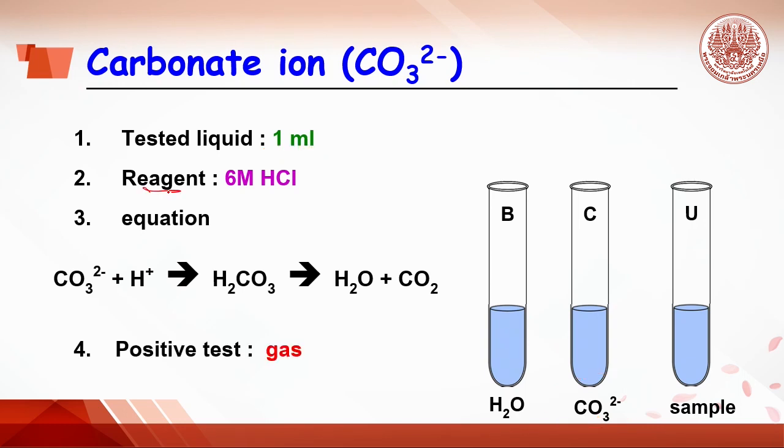The reagent for carbonate ion testing is hydrochloric acid. Each tube hydrochloric acid is added. Carbonate ion reacts with proton or acid to get carbonic acid, which is not stable.